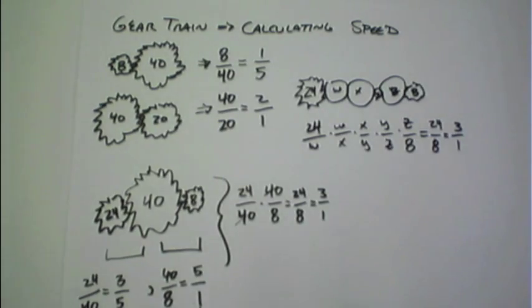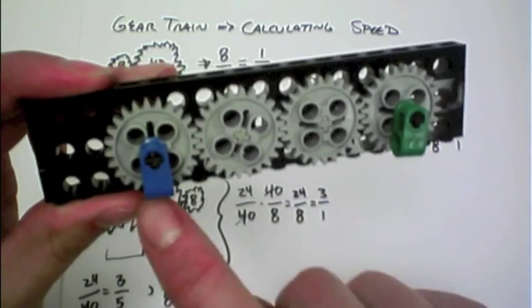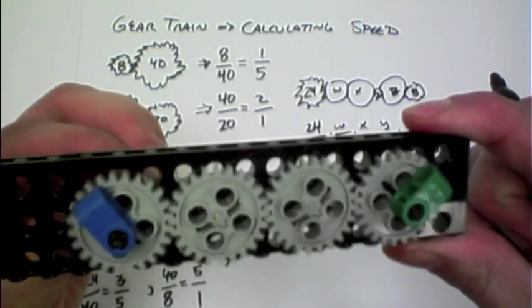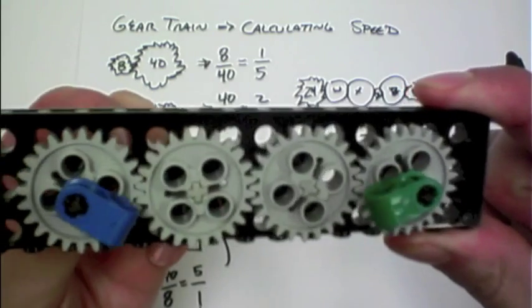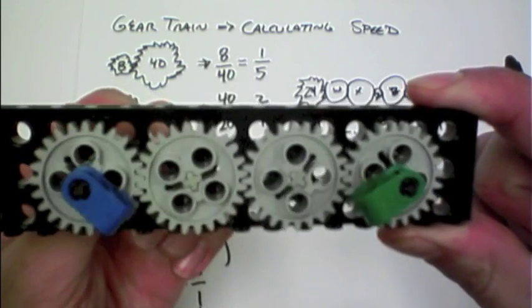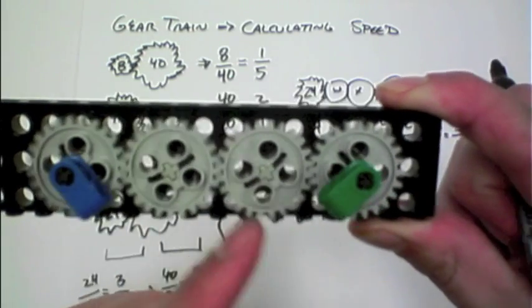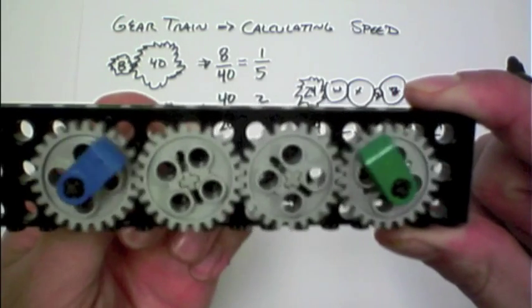If the beginning and the last gear are the exact same size, then what you have is a 1-to-1. But what you'll notice here is that these two are actually rotating in opposite directions, and that has to do with the number of gears that we have in line here.